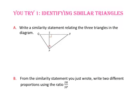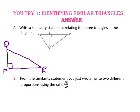Pause the video and do you try number 1. For part A, we will write a similarity statement relating the three triangles in the diagram. Let's begin by redrawing the triangles so that they are oriented the same way. We'll start with the large triangle, triangle Q, P, R. Then the medium triangle, triangle P, S, R.